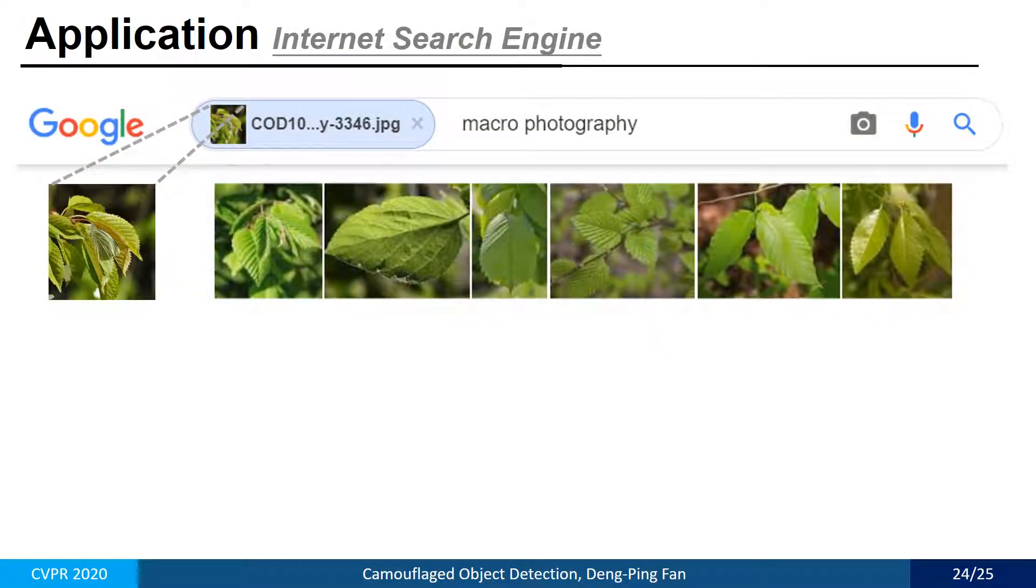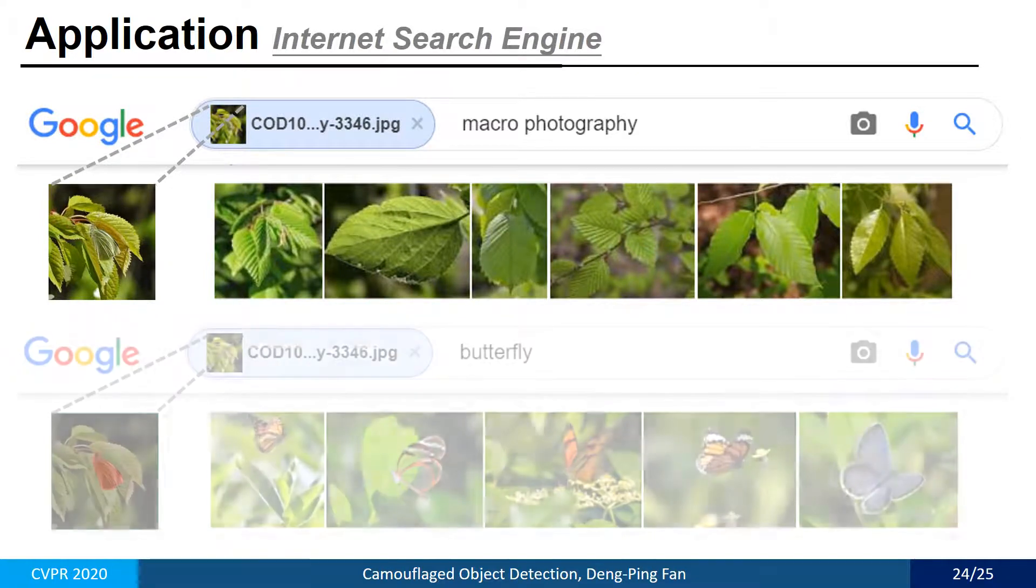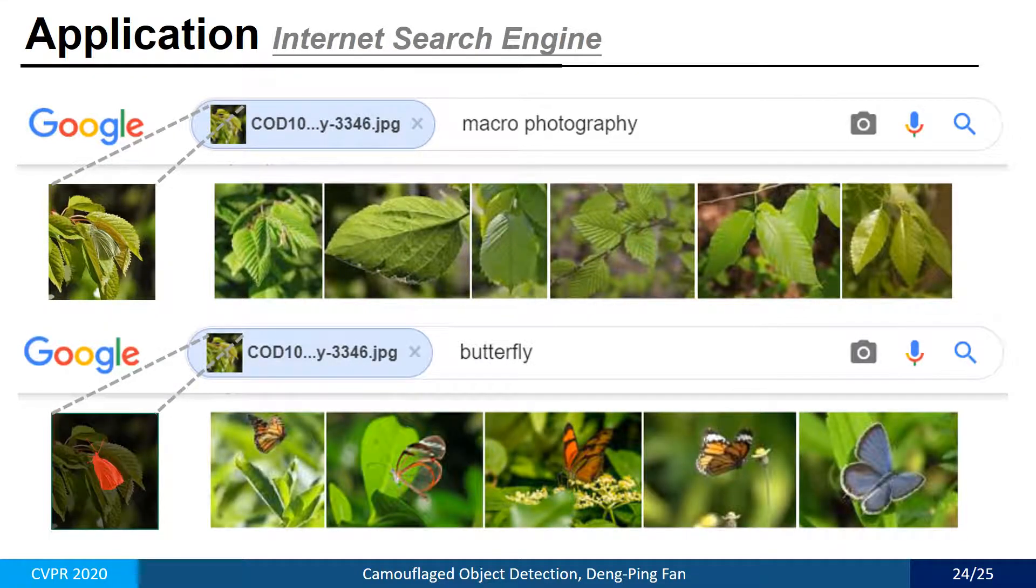We show an example of search results from Google. From the results we notice that the search engine cannot detect the concealed butterfly, and thus only provides images with similar backgrounds. When the search engine is equipped with camouflage identification systems, the engine can identify the camouflaged object and then feed back several butterfly images.